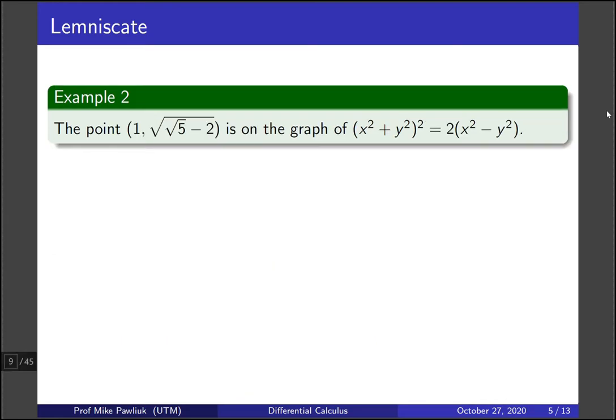Let's look at a second example. The point x = 1, y = √(√5 - 2) is on the graph of the lemniscate. Let's check that. So the left hand side if you plug in this x and y values gives you this kind of horrible thing.